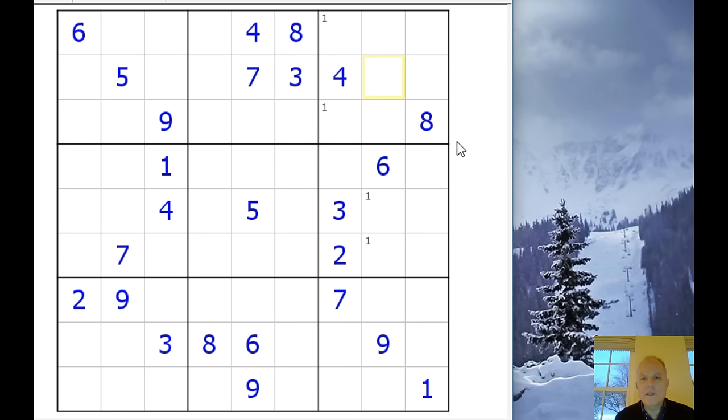What it does help with is that that suddenly makes this cell here a naked single. Now, what I mean by that is on its own, there is only one number that can now go in this cell. Before we decided where the ones went in this box, this could have been a one or a two. We've got five, seven, three, four in the row, six, nine in the column and eight in the box. That leaves one or two. But now, because these ones are known to be in column seven, this must be a two.